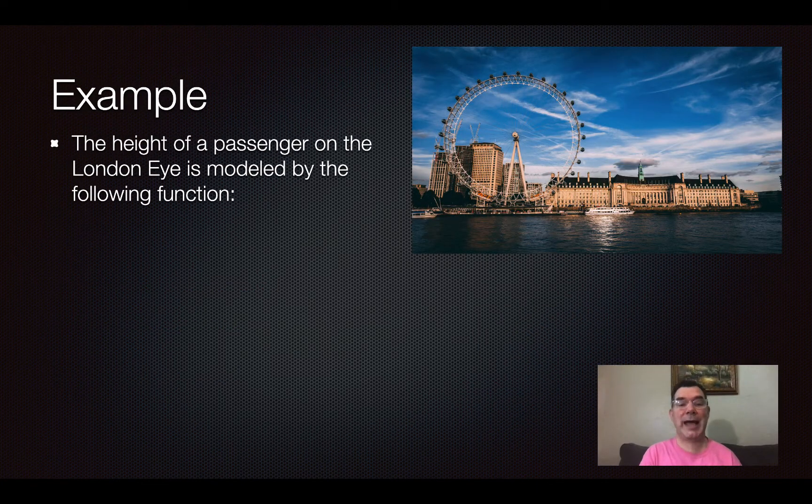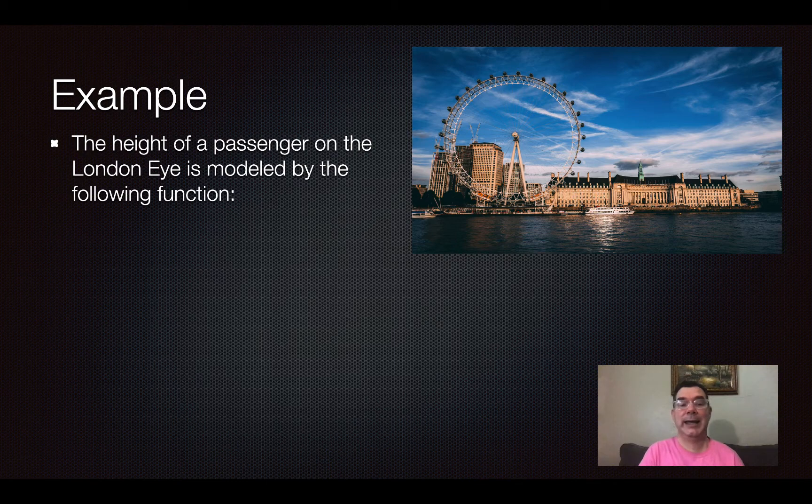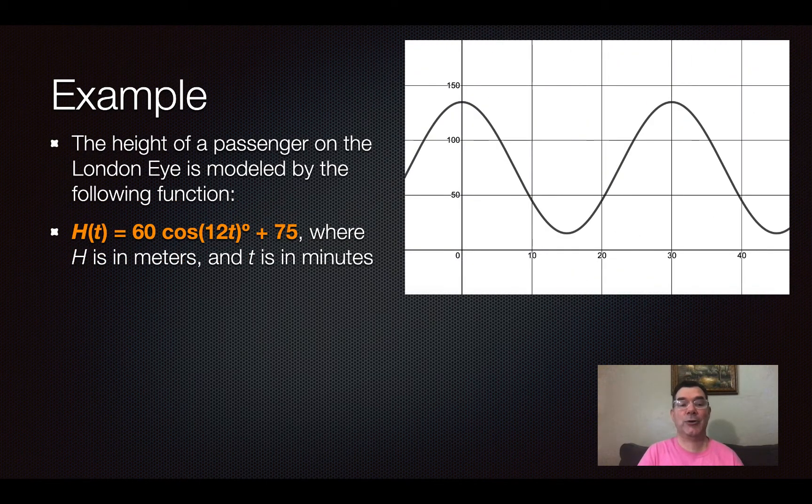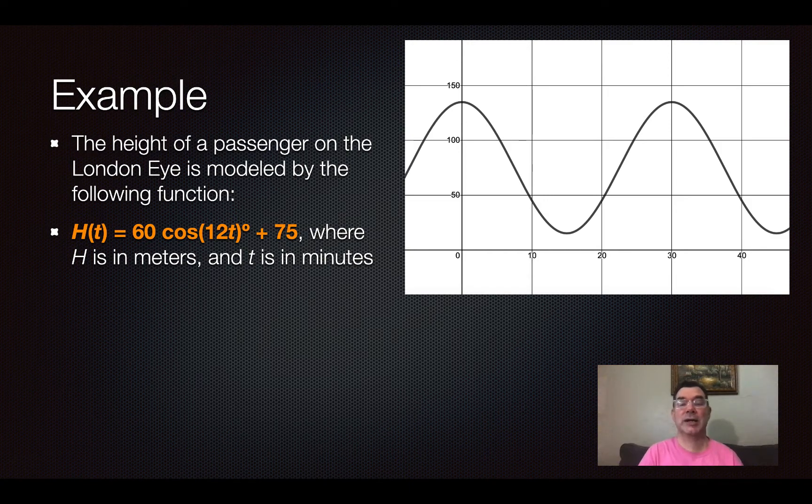So here's an example. We have a passenger on the London Eye and his height on that ride is going to be modeled by that graph and that function, h equals 60 times the cosine of 12t degrees plus 75.